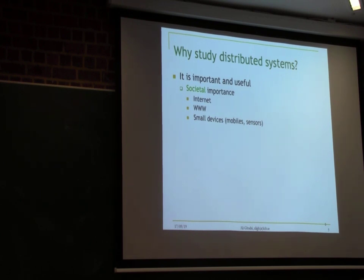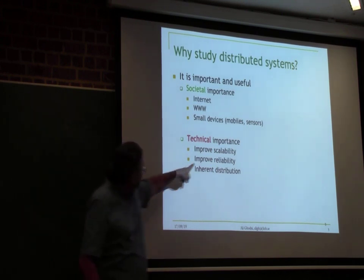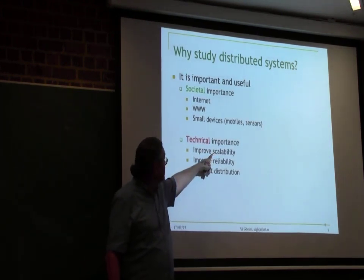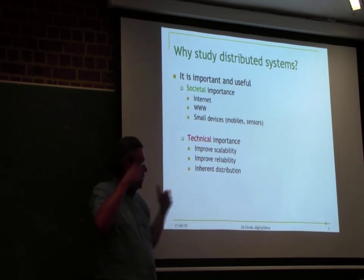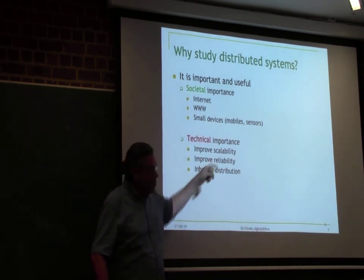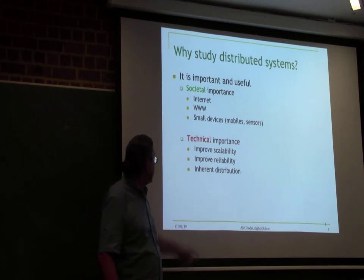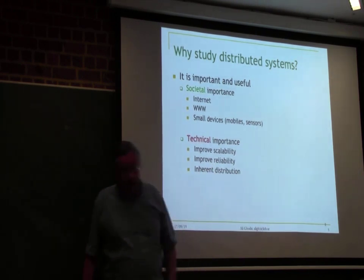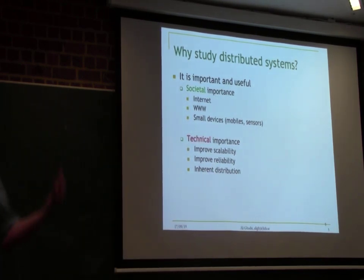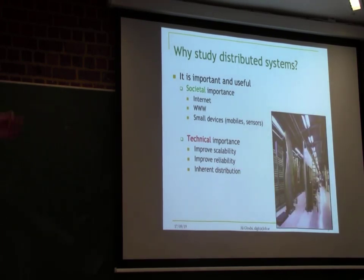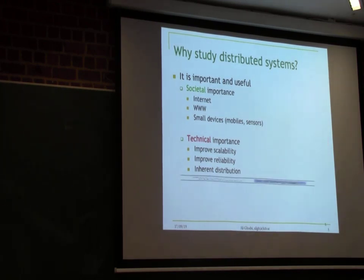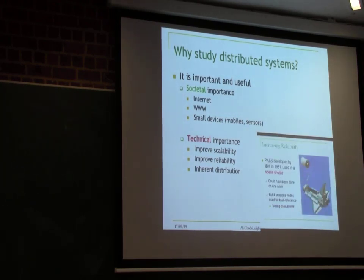So it's important to understand them. We want to talk about scalability, the size. The Internet is one of the biggest, of course — it has billions of nodes. But even smaller systems can be complicated. There's the reliability and the distribution aspect: how do we organize programs? There are many examples, like this data center with lots of racks.